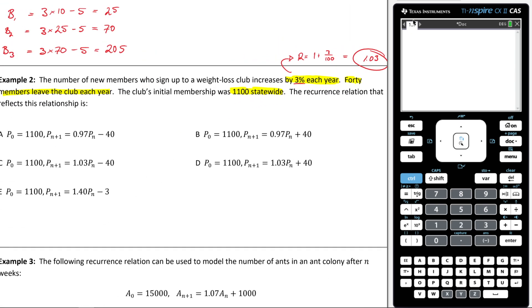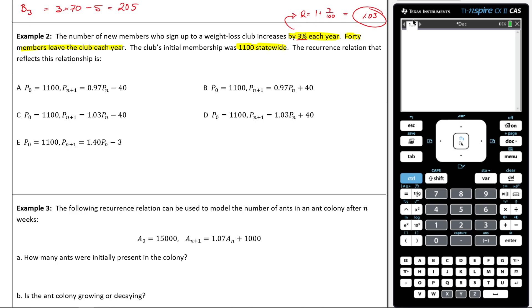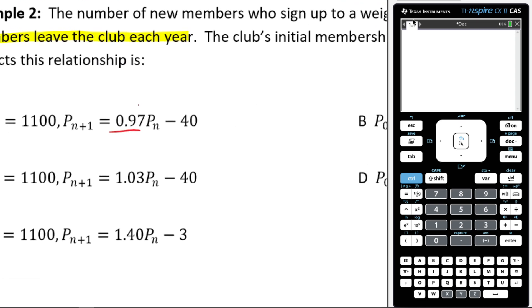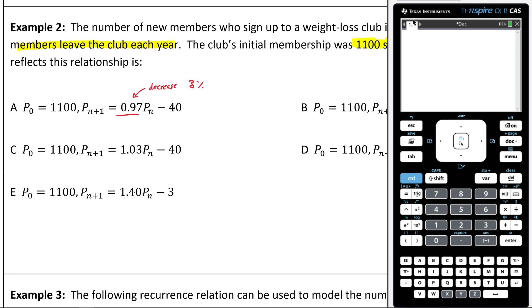What else are we told? We are also told that each year, 40 members leave. So which of these scenarios represent that? Well, let's go through each one. Well, I've got 1,100 as my initial, which is great, but then it has 0.97 here. Hmm. What does that mean? This would actually mean I'm decreasing by 3% every year. This would be a decrease of 3%. We want an increase of 3%, so this is no good. So let's cross out A.